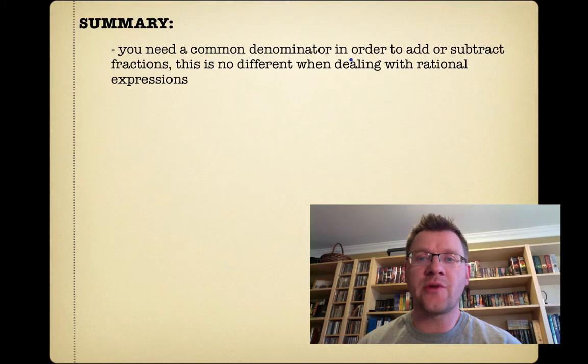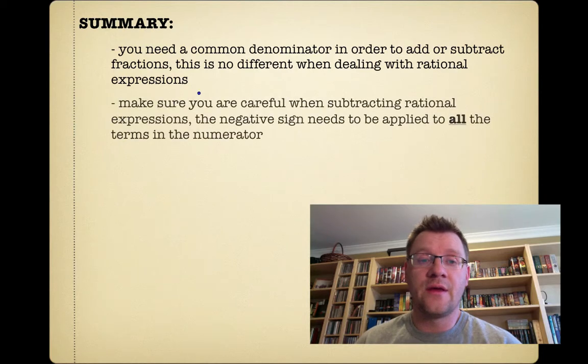So in summary, you need a common denominator in order to add or subtract fractions. This is no different when you're dealing with rational expressions. You need to find that common denominator. Make sure that you're careful when subtracting rational expressions. The negative sign needs to be applied to all the terms of the numerator. And when you're finding that common denominator, remember that you want to factor the denominators first and see if there's anything common.